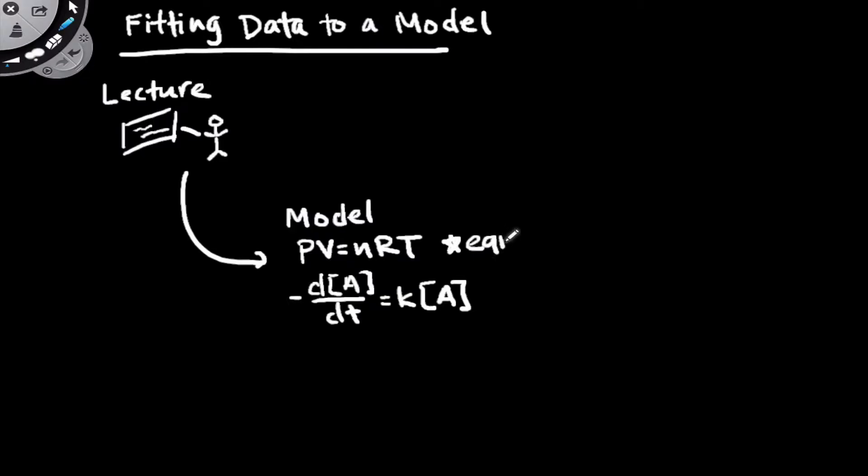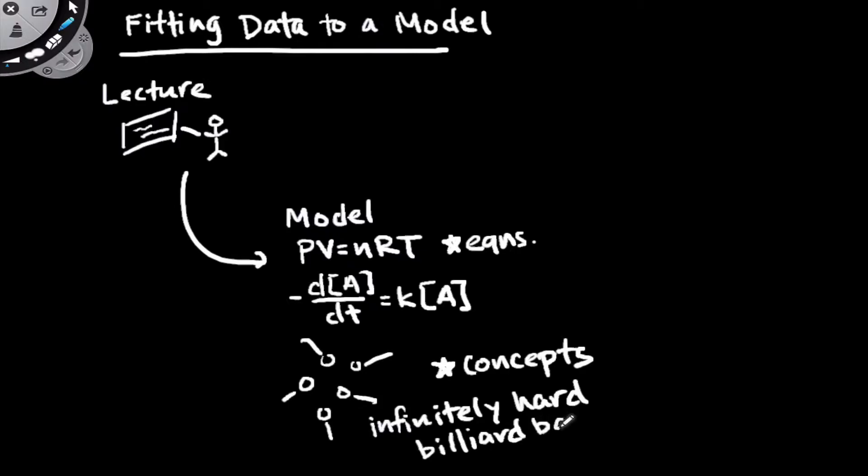But these equations are really only half of the story. There are also conceptual aspects to models and conceptual models of chemistry, and these are based primarily in what the molecules are doing at the molecular level. We can't view the molecular level directly. It's microscopic, but we can think conceptually about how molecules are behaving, and this is the basis of conceptual models in chemistry. For example, the ideal gas model of infinitely hard billiard balls with zero volume bouncing around in perfectly elastic collisions is the conceptual basis for the ideal gas equation and the ideal gas model.